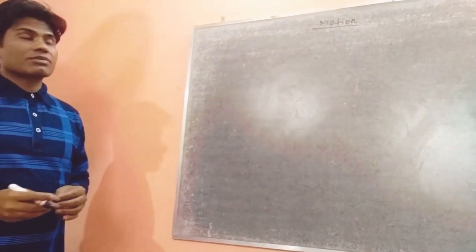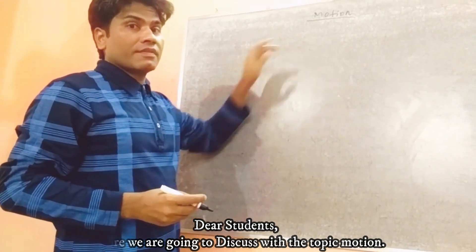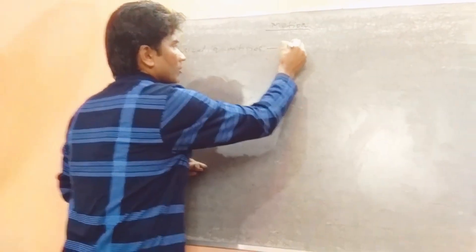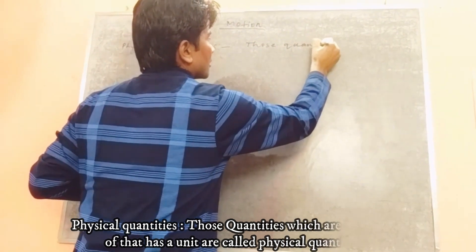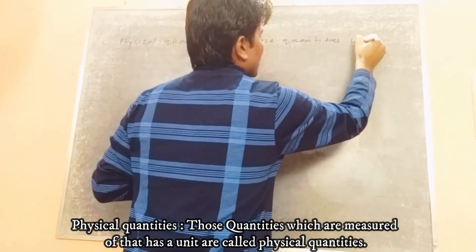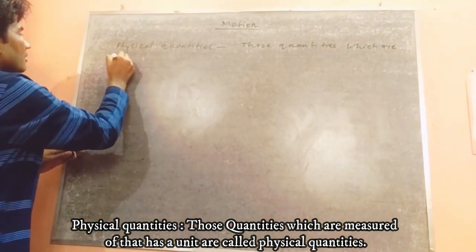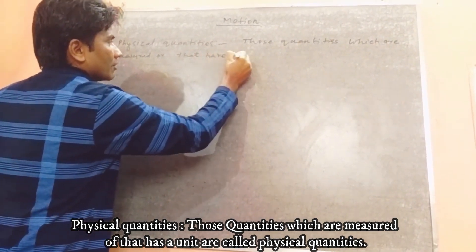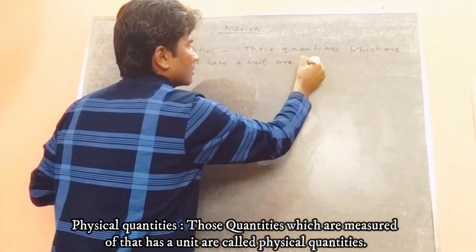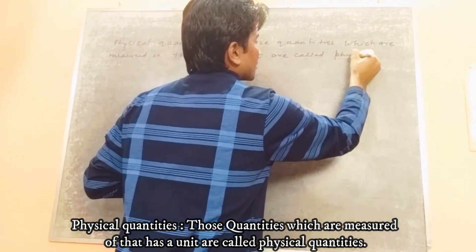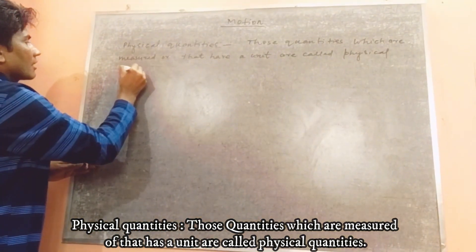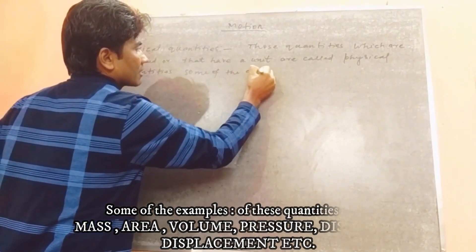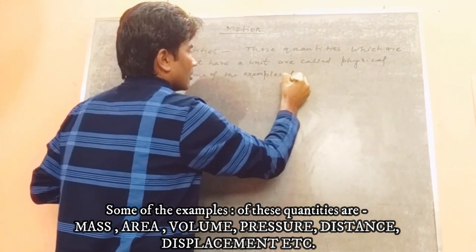Before we discuss the topic of motion, first we have to describe a very important term called physical quantities. Those quantities which are measured or that have a unit are called physical quantities. Let us take some examples of these quantities.